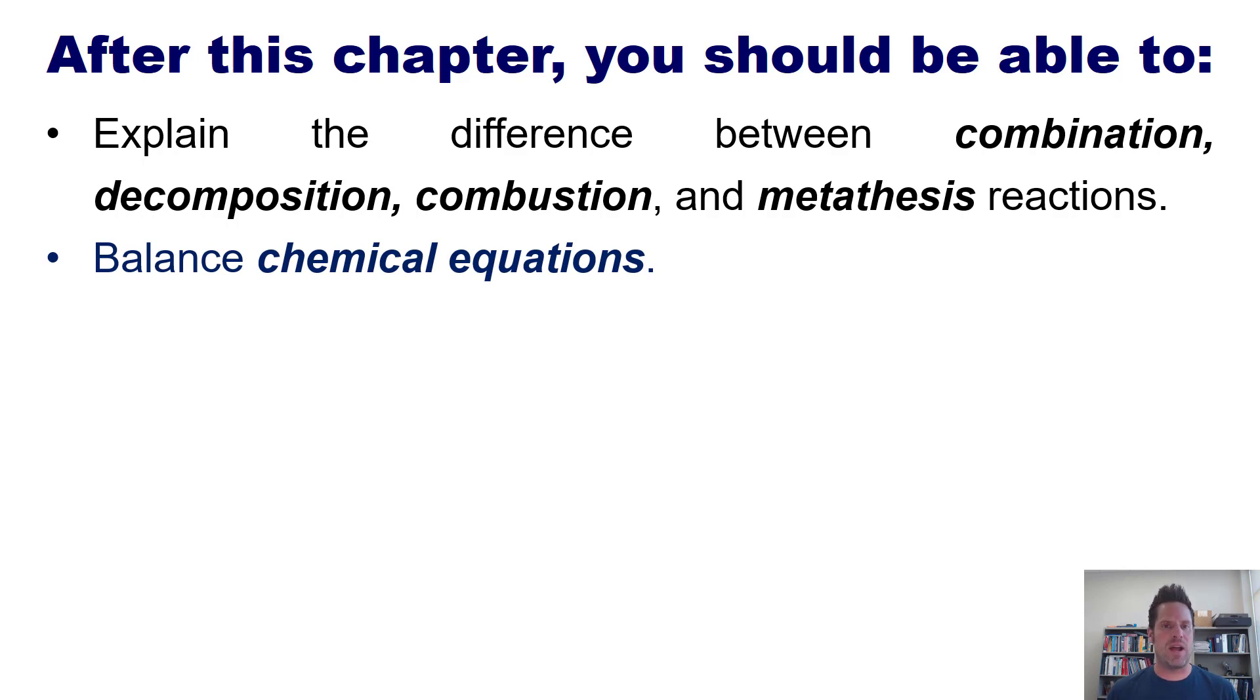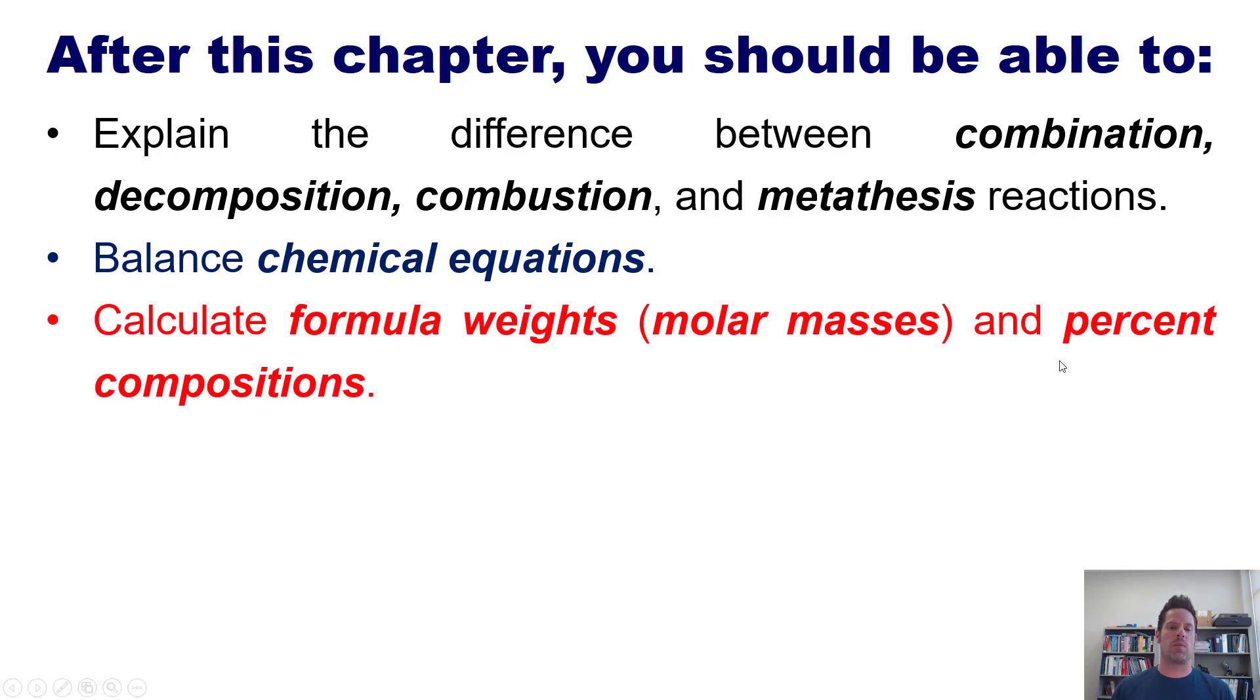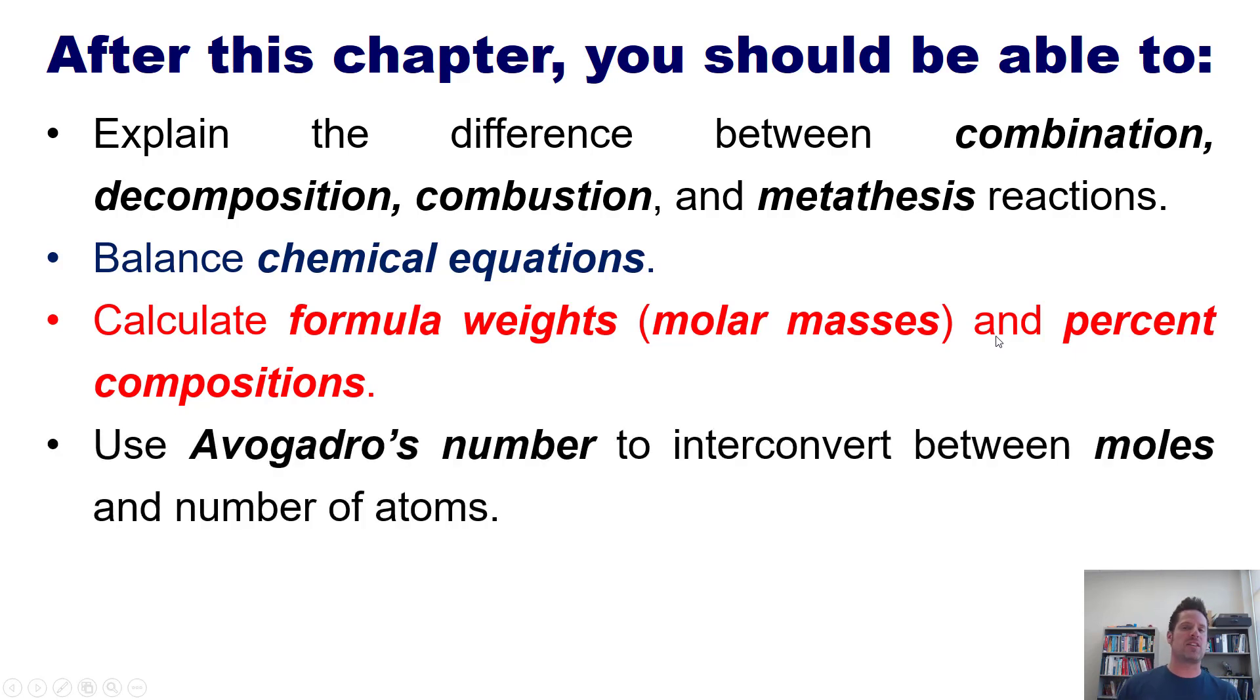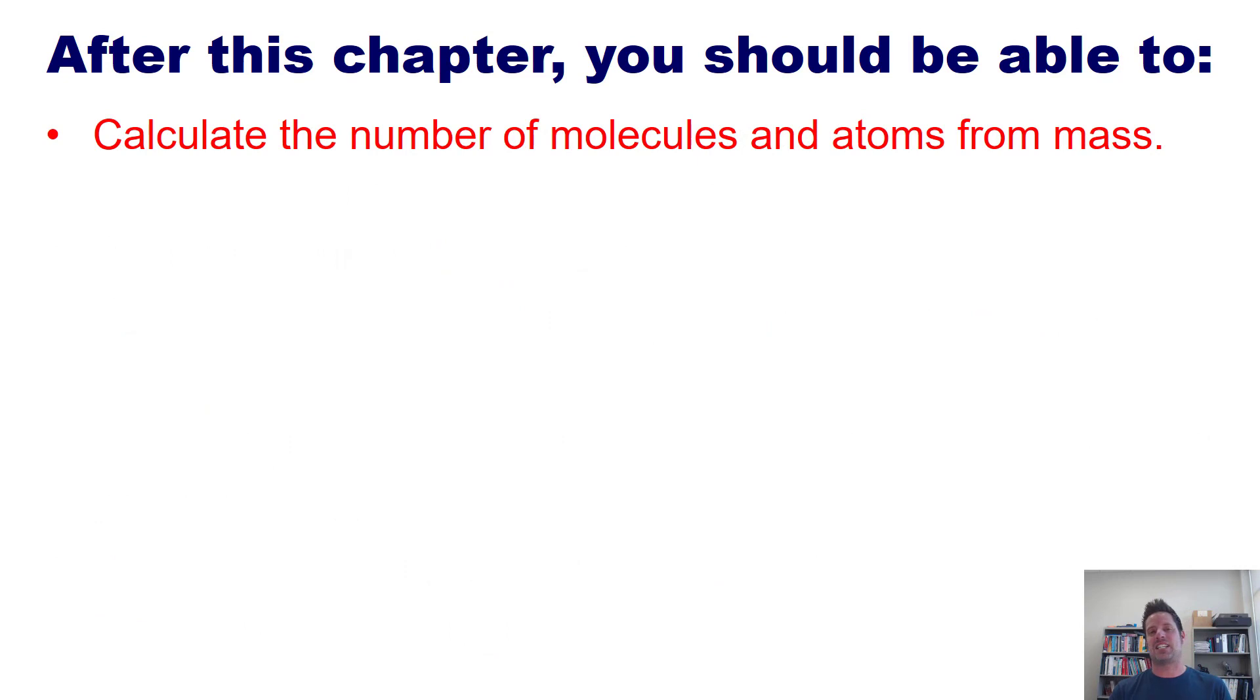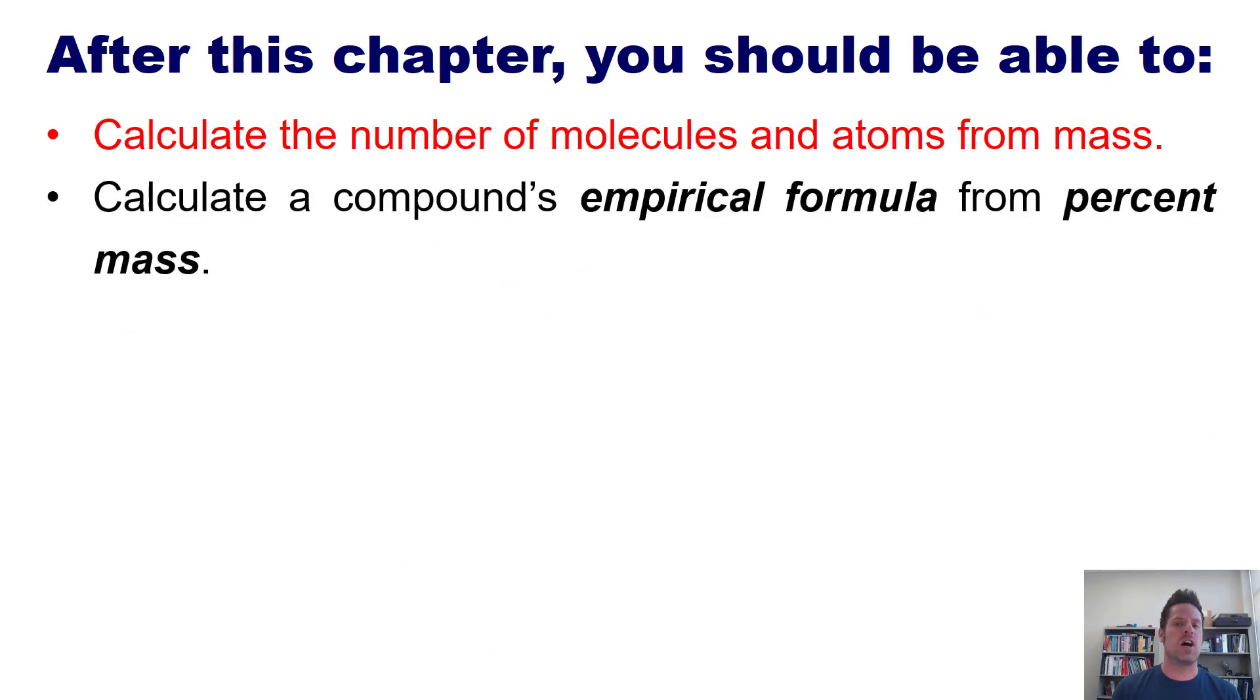Next, calculate formula weights, also called molar masses, and percent compositions. Use Avogadro's number to interconvert between moles and number of atoms. Use a compound's molecular weight to interconvert between moles and grams. Calculate the number of molecules and atoms from mass. Calculate a compound's empirical formula from percent mass.